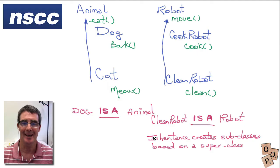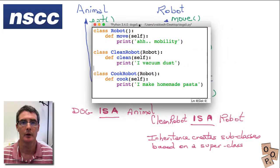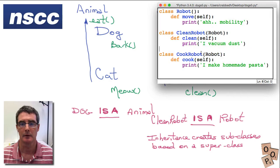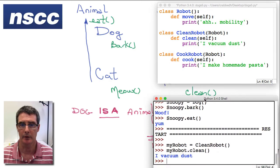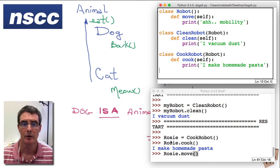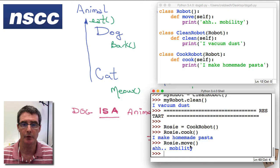So as a review the inheritance design model creates subclasses based on superclasses. And how we would do this in code looks something like this and so we'll look at our instantiation of this. So we're creating rosie which is a cook robot and rosie can cook by using that method and rosie can move by using the move method which rosie inherits from the superclass robot.